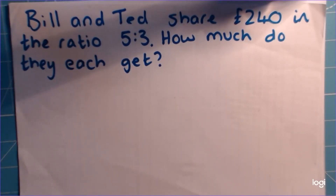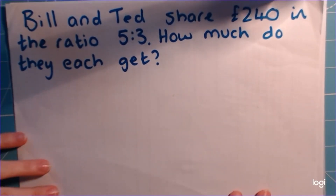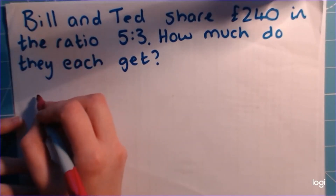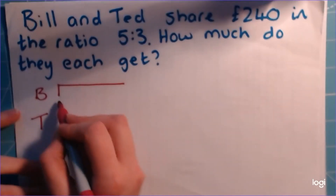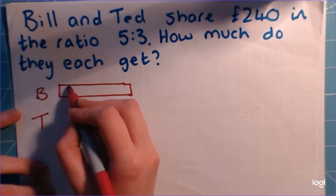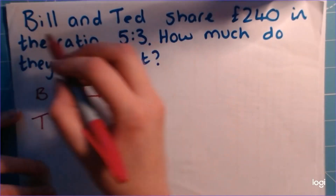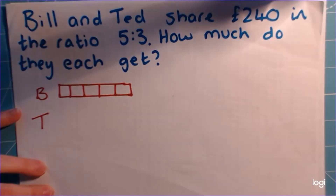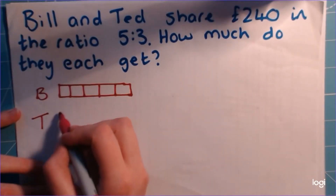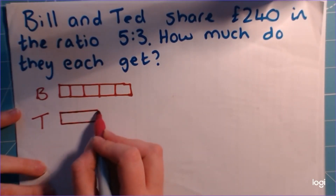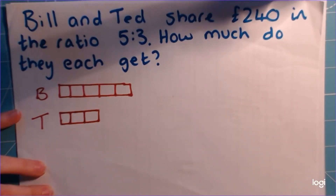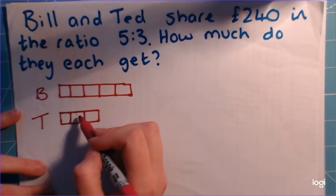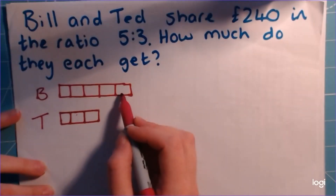We looked at this briefly last lesson just before we finished. We did this using a bar modelling method. So down the side I'm going to put Bill here and Ted here. Next to Bill we're going to get 5 little boxes, because Bill's name comes first so Bill gets the first number in the ratio. So that means Ted gets 3 portions. Make sure that these are lined up — it won't cause too many issues right now, but in the next couple of lessons it will make it much easier if these are lined up really nicely, one box below each other. So we've got 5 parts here and 3 parts here.